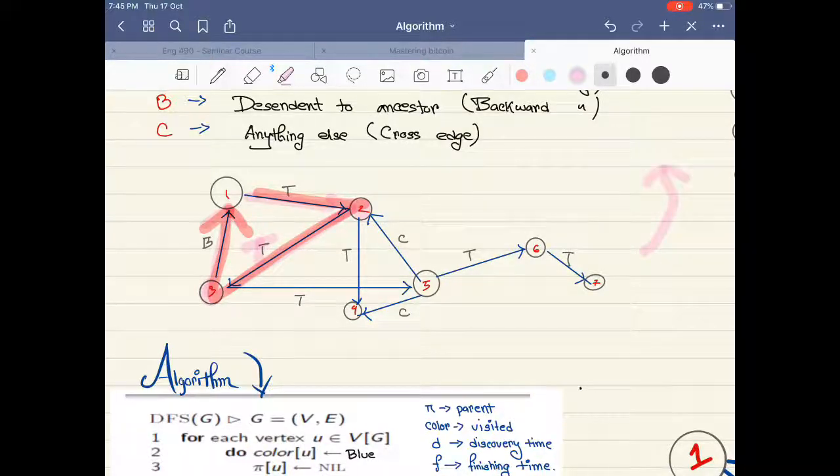And going back to the parent, that's why from three we are going back to its parents, so this would be a backward edge. Okay, so this whole thing creates a cycle.